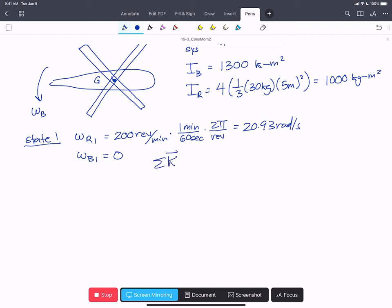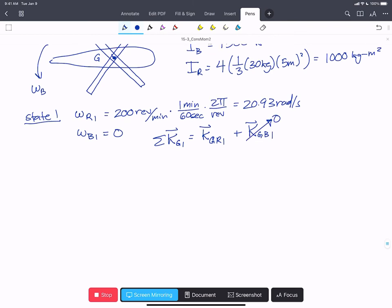The total angular momentum of the system about point G for state one is the angular momentum about G for the rotor at state one plus the angular momentum about G for the body at state one. And that's going to be zero because omega is zero. So all we have left is the rotor.